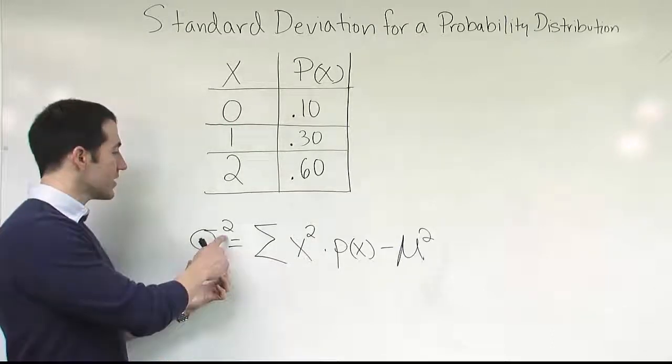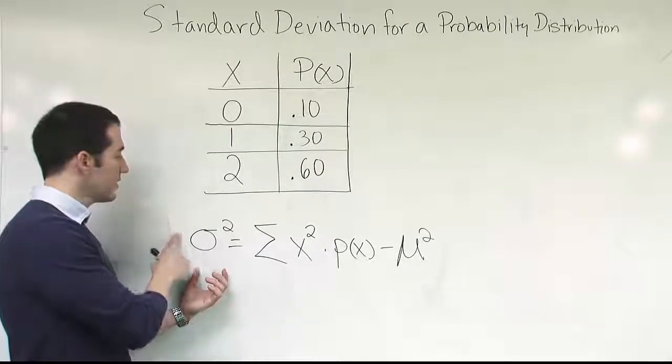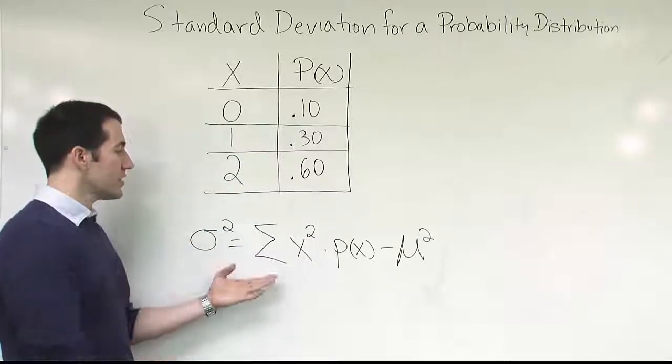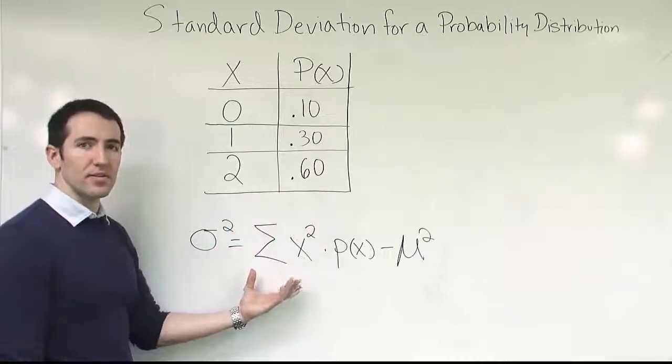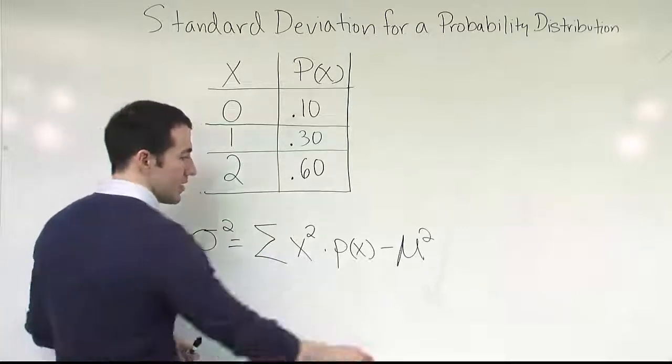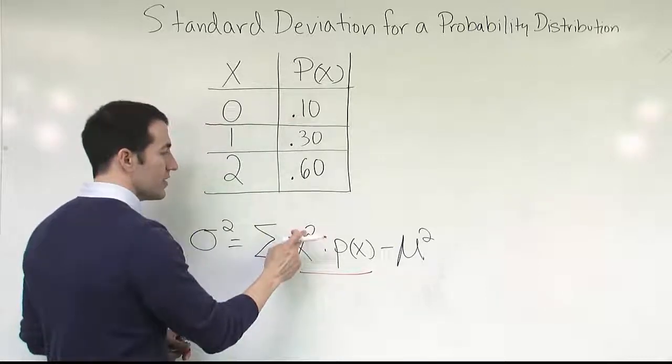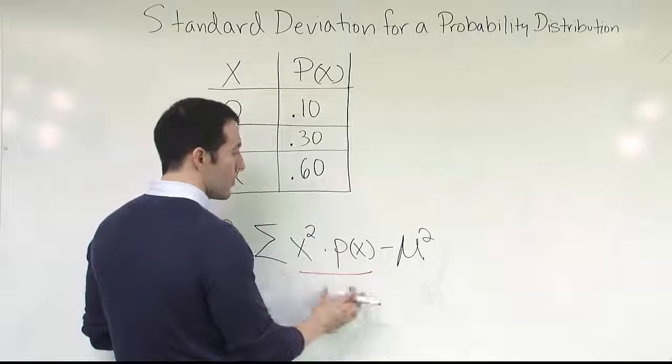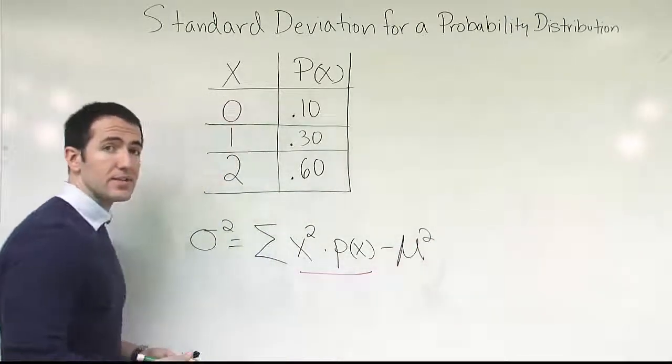So this is actually the variance, sigma squared. Remember, to get to the standard deviation, we simply take the square root of this. So take the square root of sigma squared to get sigma, and you have your standard deviation. I just wanted to look at it in terms of the variance first, because the square root sometimes makes it a little more cumbersome to look at. But this symbol, of course, is just saying to sum. What are they asking us to sum? They want us to sum this quantity here, x squared times p of x. And then from there, when we get that total, we're going to subtract off the mean value squared, or the expected value squared. That's it. That's the formula for variance.